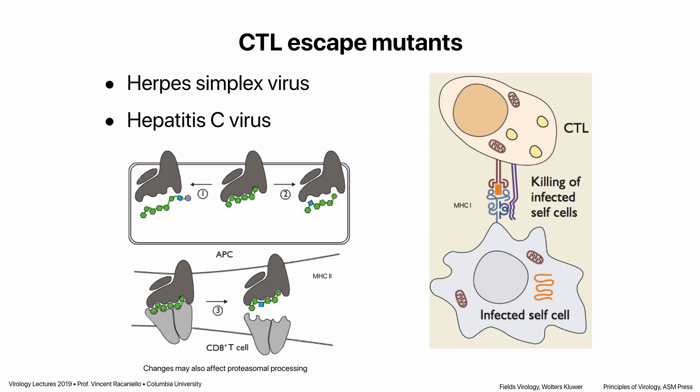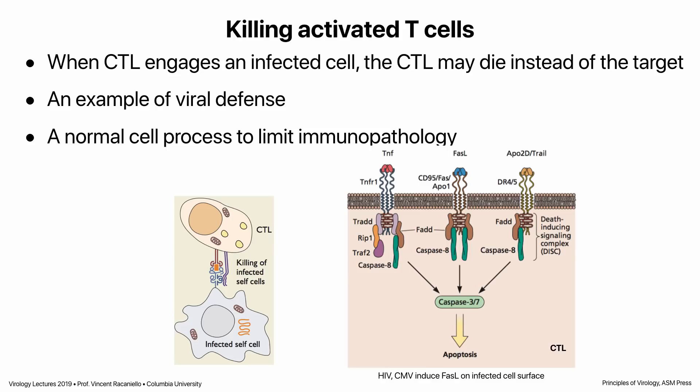These single amino acid changes in the peptides, which occur as part of a longer protein that is then processed, can also affect proteasomal processing. The viral protein goes through the proteasome and is chopped into peptides, but sometimes amino acid changes mean the peptide isn't produced — it stays as part of a longer protein that doesn't load onto MHC. A single amino acid change could prevent its processing, so it never makes it to the MHC. So CTL escape mutants can act at the level of CTL killing, antigen presentation, peptide display, or proteasomal processing — in addition to MHC antagonism.